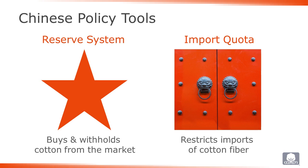The two tools that the Chinese government uses are the reserve system and import quotas. The reserve system operates by making purchases and then withholding the cotton that was bought from the market. Over time, this cotton is sold back to the market through controlled auctions. Import quotas regulate the amount of cotton that can be brought into the country and are another way of managing domestic supply. Together, these two tools allow the Chinese government to heavily influence domestic prices.